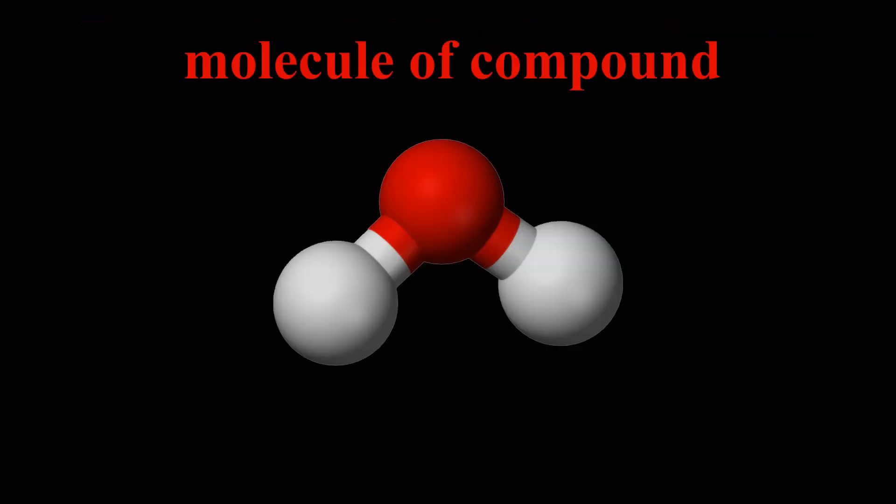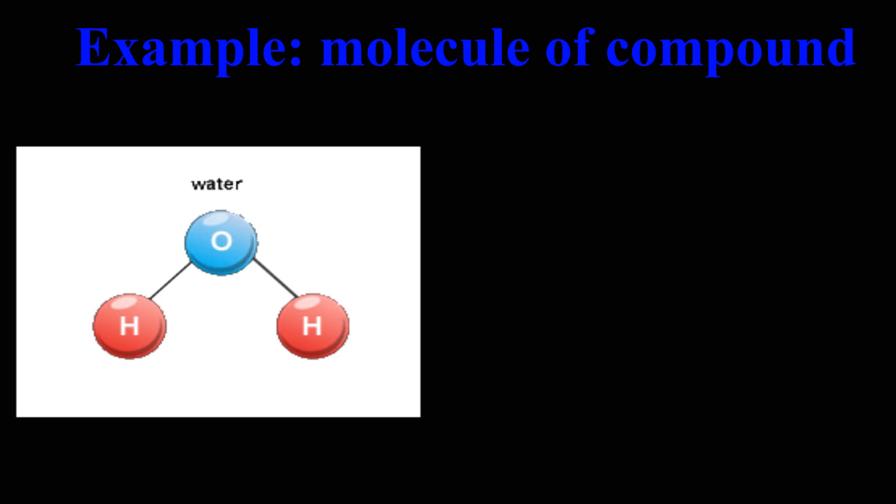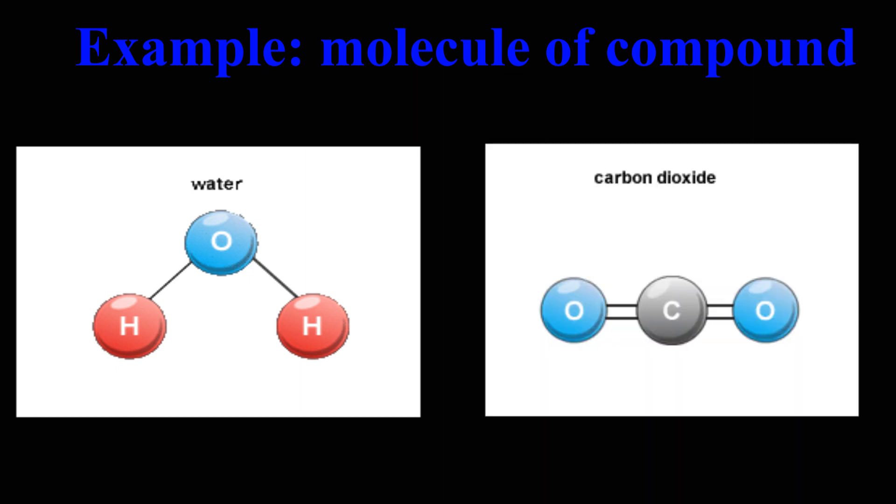When a molecule has different types of atoms, it is called a molecule of compounds. Water has two hydrogen atoms and one oxygen atom, so it is a molecule of compounds. Carbon dioxide has two oxygen atoms and one carbon atom. It is also a molecule of compounds.